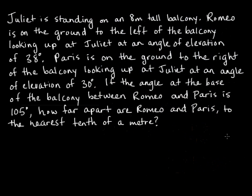Here's another three-dimensional question. Juliette is standing on an eight-meter-tall balcony. Romeo is on the ground to the left of the balcony and is looking up at Juliette at an angle of elevation of 38 degrees. Paris is on the ground to the right of the balcony and is looking up at Juliette at an angle of elevation of 30 degrees.